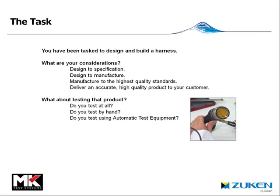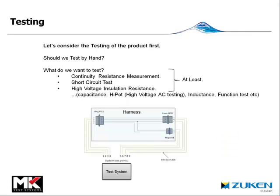So what do we consider? Do we test it at all? Do we manually test or do we use an automated system? At the very least we should measure continuity resistance, short circuit measurements, and insulation resistance measurements. We could of course measure capacitance and impedance, but when manually testing we would probably leave those out.